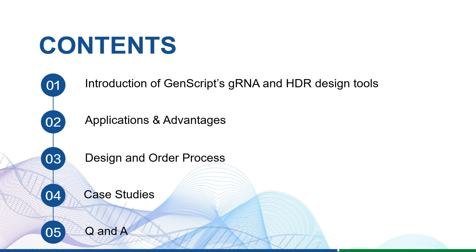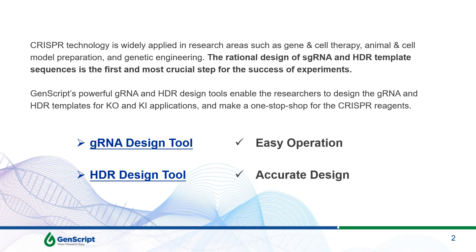I will show you how to design and order those reagents online. In the first part, I'm going to share a few cases to further explain in what kind of scenario you can use those tools, and how to determine the best design parameters to buy the exact designs you need for your projects. The last part is the Q&A session where we will reserve some time to collect and answer questions. As we know, CRISPR technology is widely used in different research areas such as cell and gene therapy development, cell and animal disease modeling, genetic engineering in plants, and vaccine development, to name a few.